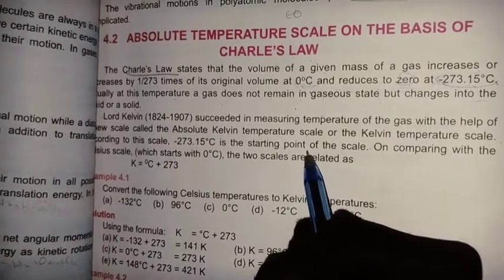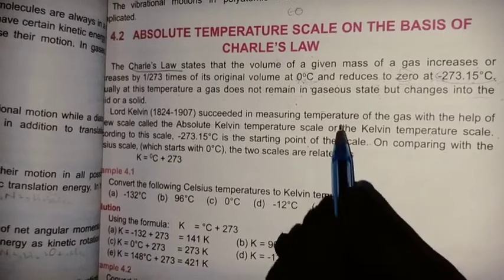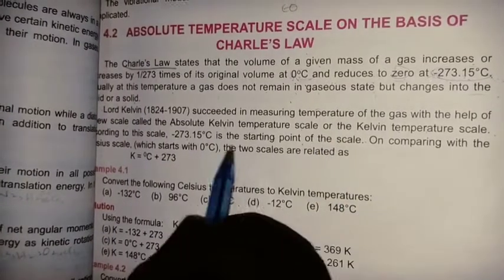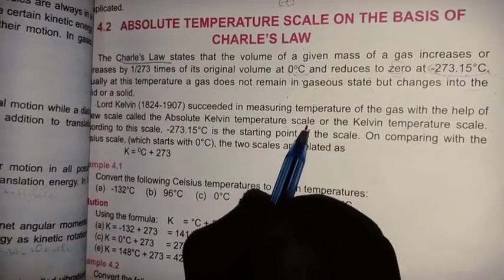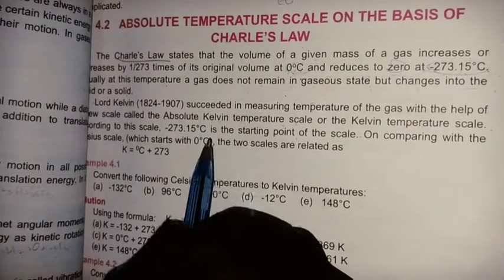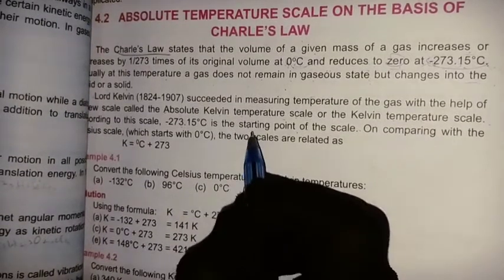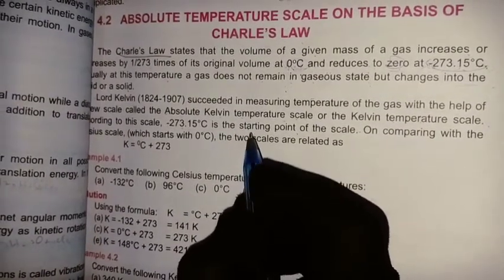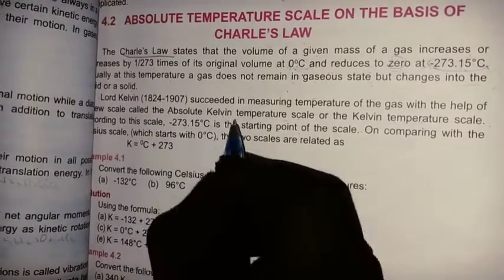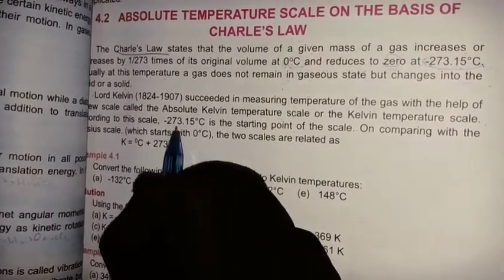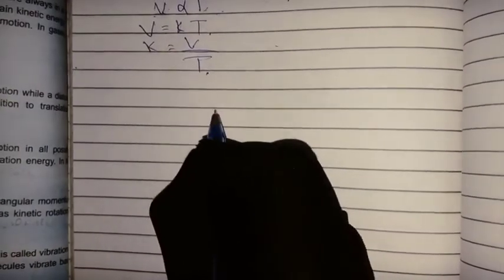According to this scale, minus 273.15°C is the starting point of the scale. This is the absolute Kelvin temperature scale. It starts from zero Kelvin, which corresponds to minus 273.15°C on the Celsius scale.